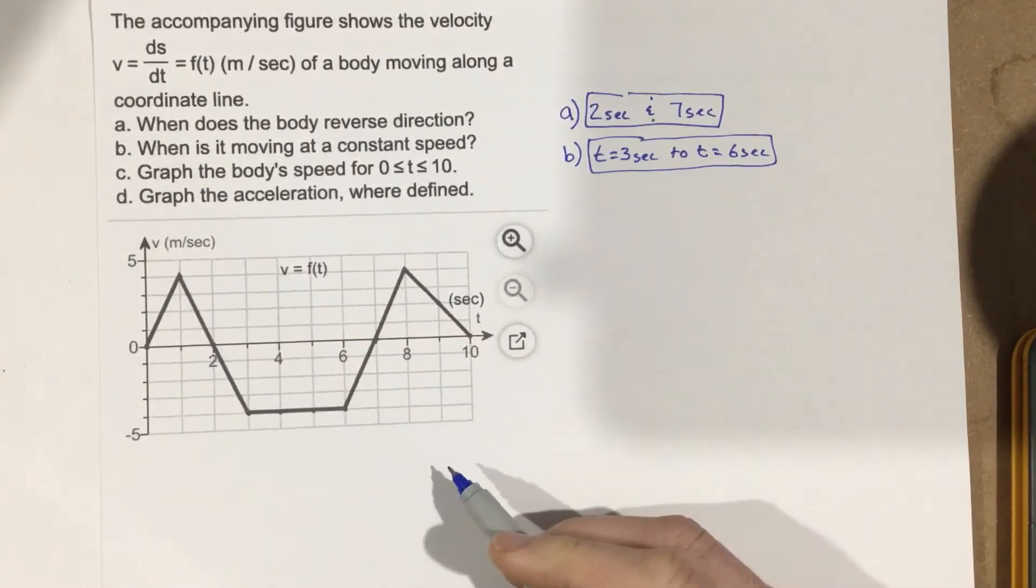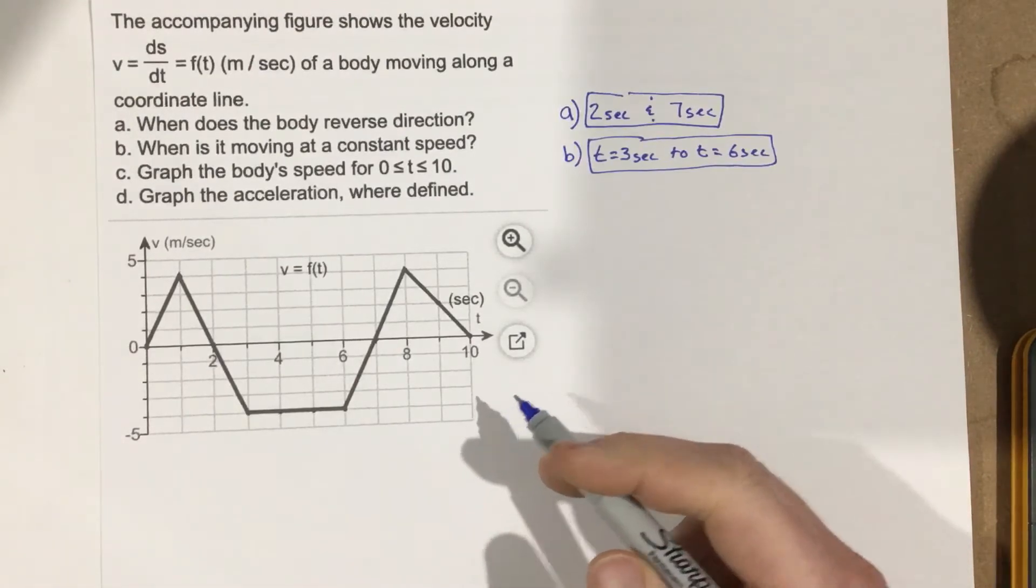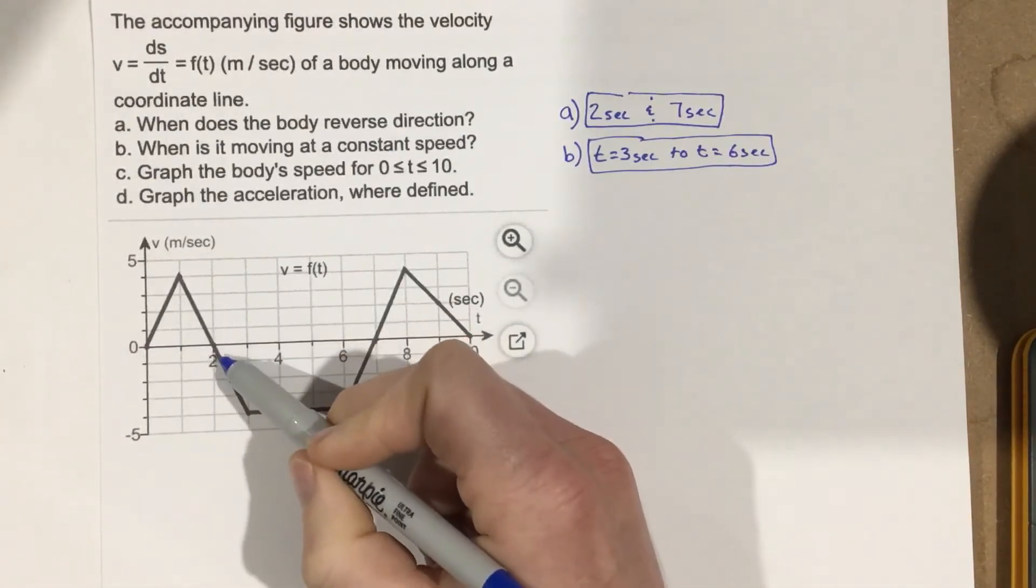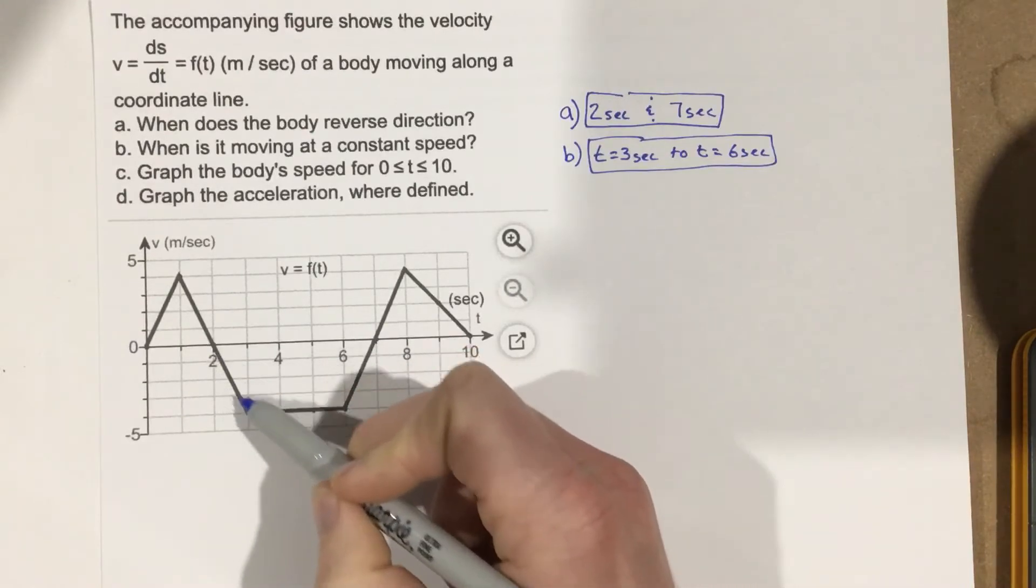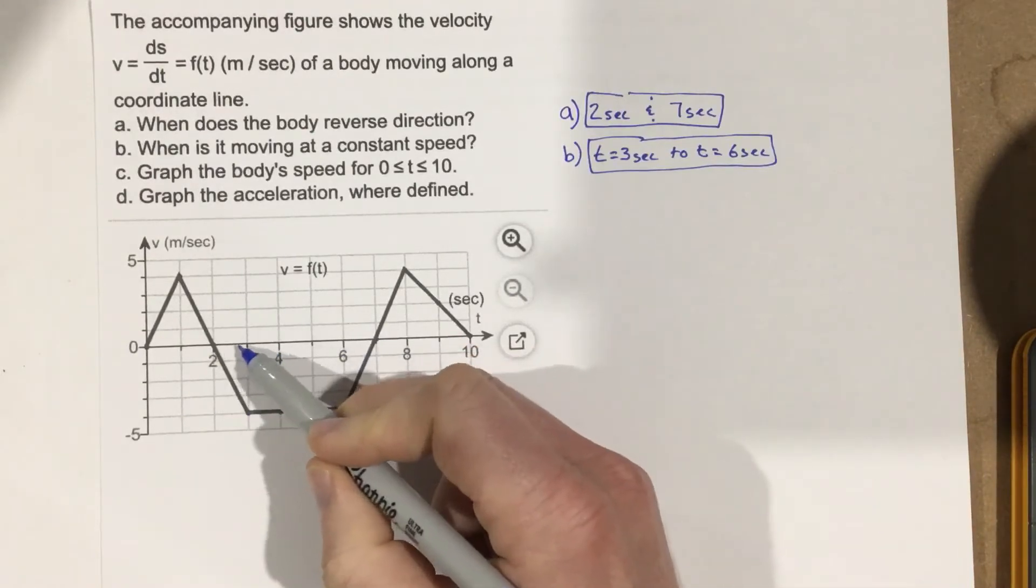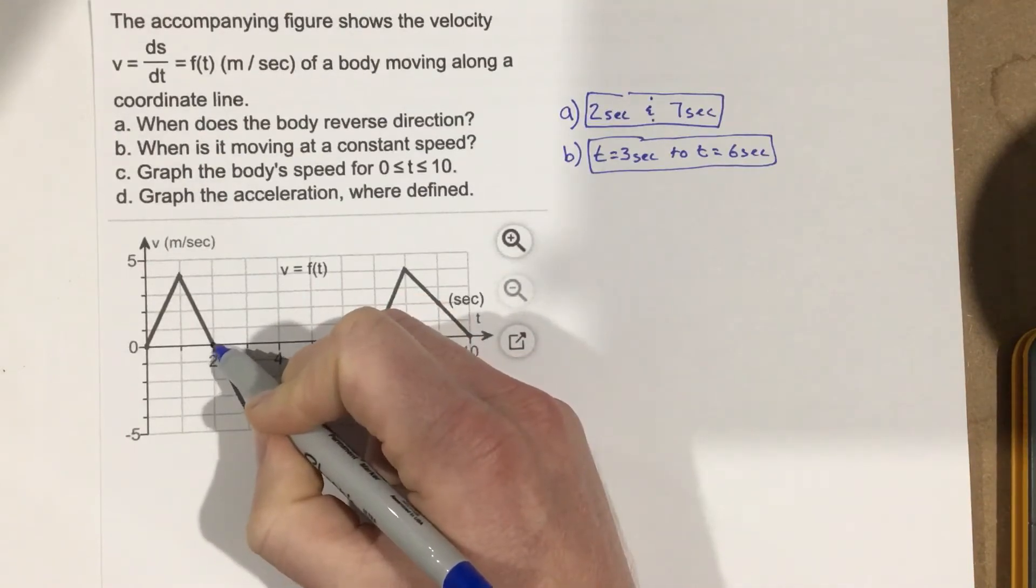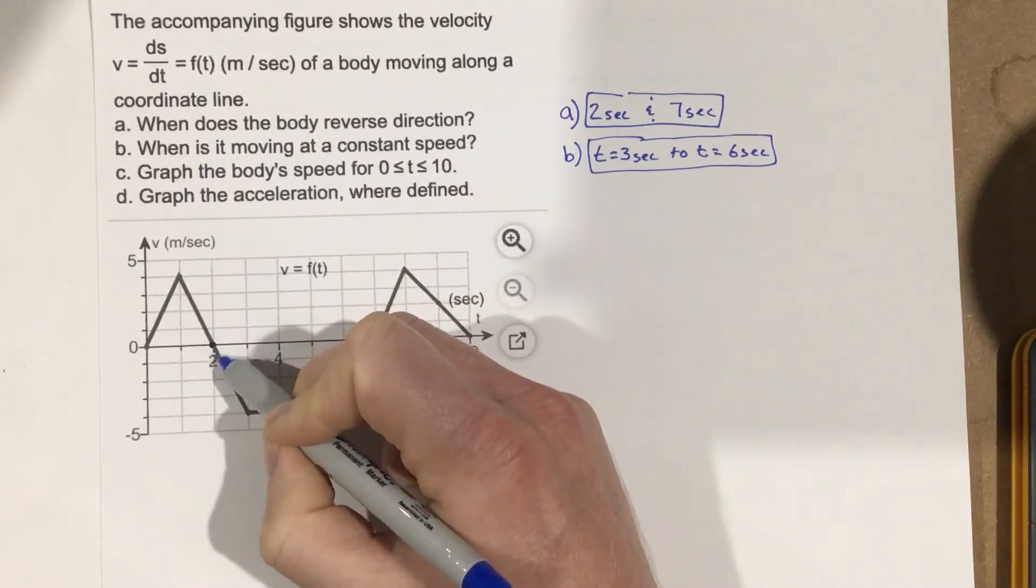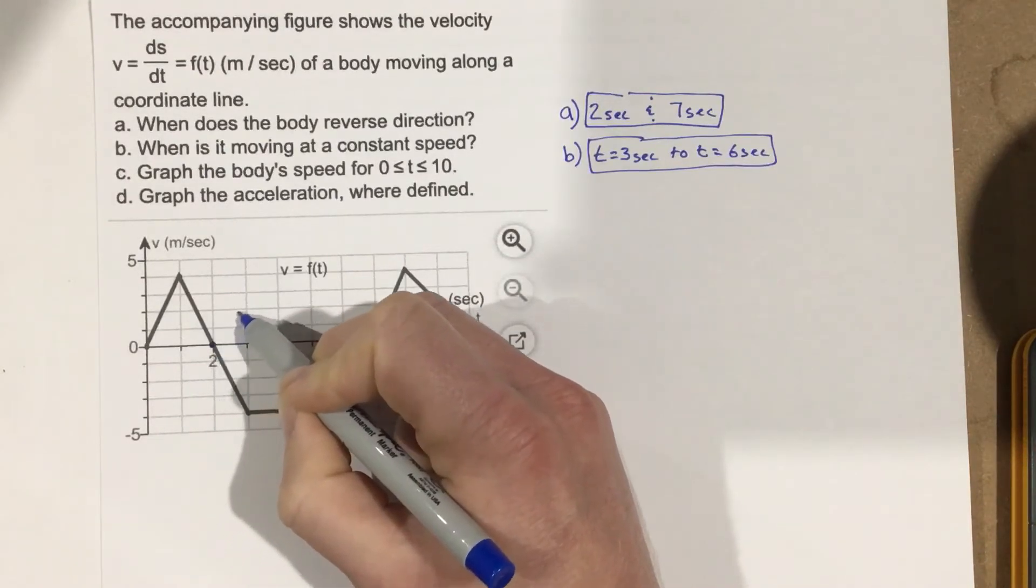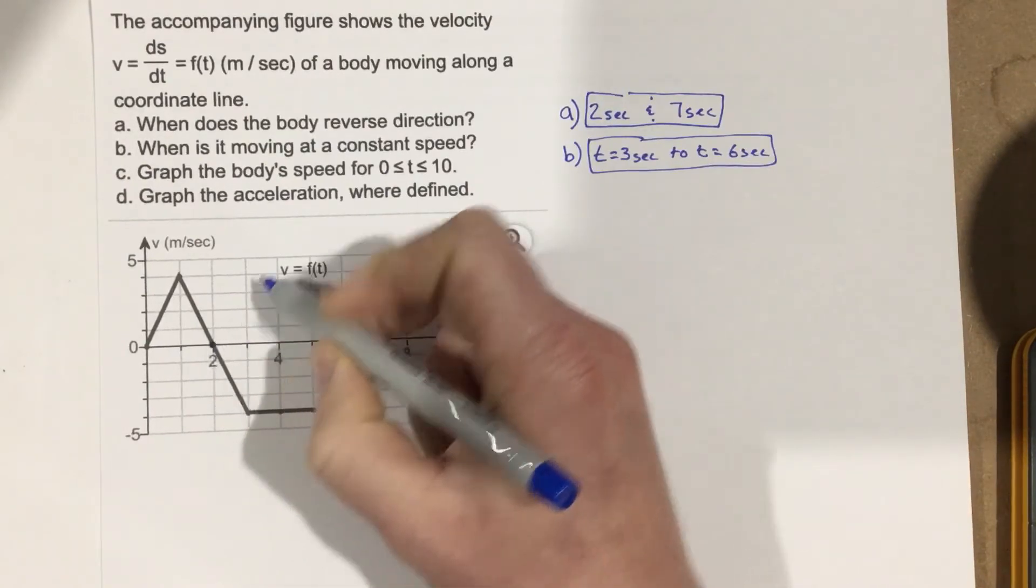So if we're going to graph the speed graph, all we have to do is instead of having our graph below zero meters per second, we need to instead, at this point, if this is the speed graph, this point instead of going below, it would actually start coming back up here. So I'm just going to graph this piece that's underneath this line above the line.